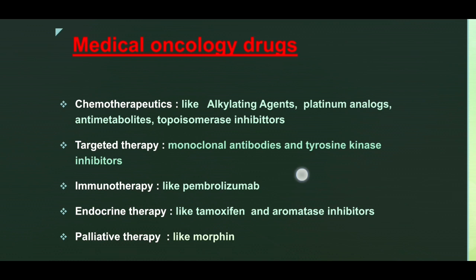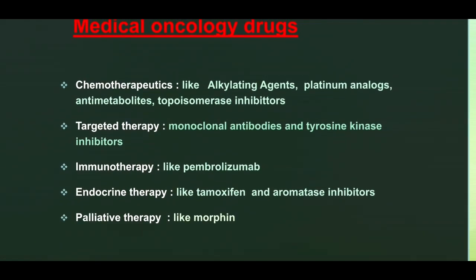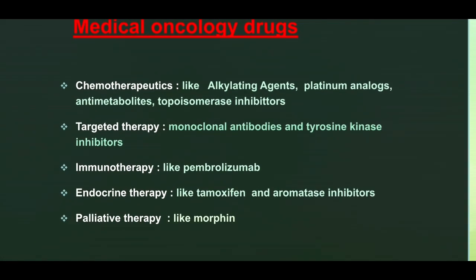Immunotherapy is a group of drugs newly used for the management of malignant diseases, like pembrolizumab and nivolumab. Endocrine therapy is used for certain malignancies, like breast cancer, and includes drugs like tamoxifen, aromatase inhibitors, and others.